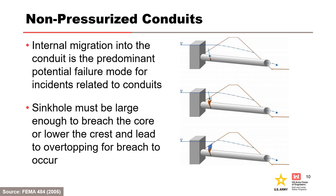As water is impounded, a phreatic line develops and seepage forces are active in saturated soils around the conduit. Seepage can enter any defects into the conduit if the conduit has an interior pressure lower than the water in the soil pores. If seepage discharging into a non-pressurized conduit has sufficient gradient and the soils are erodible, soil particles may be carried with flow. Internal migration will cause a void or a sinkhole to develop.